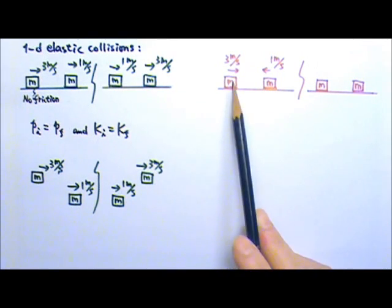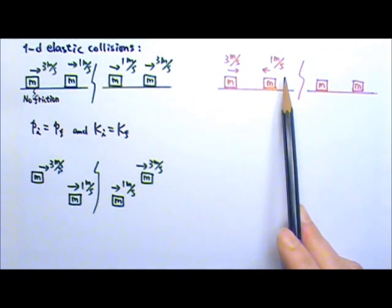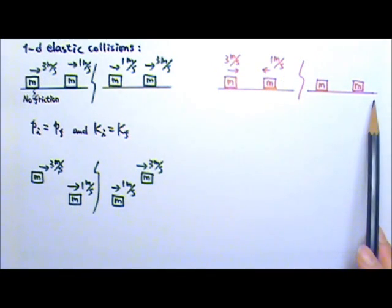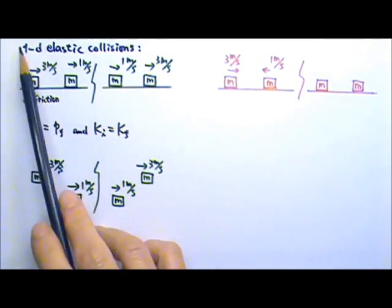If I change the initial velocities to three meters per second to the right and one meter per second to the left, what do you think the final velocities will be if it is still one-dimensional elastic collision?